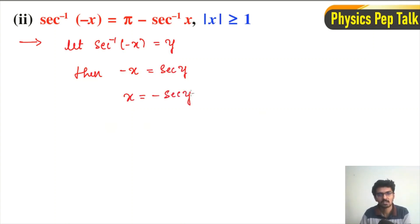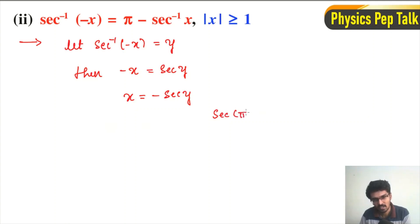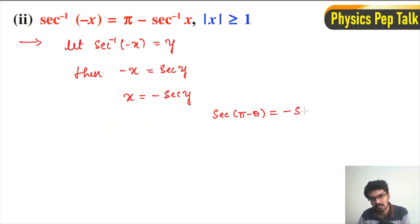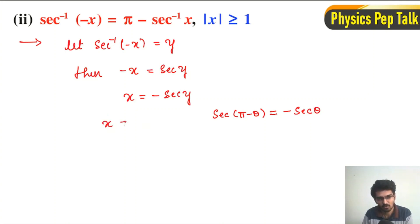If the negative sign is on the angle, we make use of the property sec(π - θ). The angle (π - θ) lies in the second quadrant. In the second quadrant, sec is negative. Therefore, sec(π - θ) = -sec(θ). So x = sec(π - y).